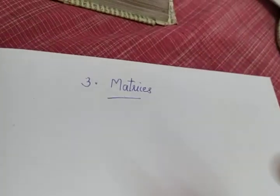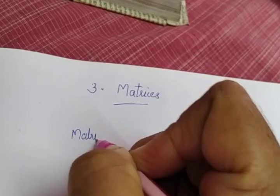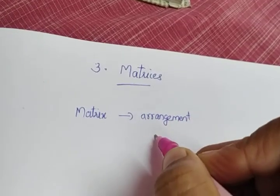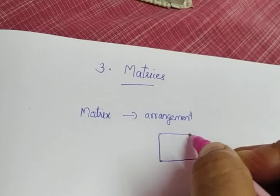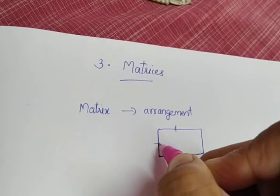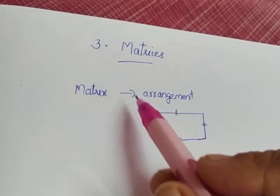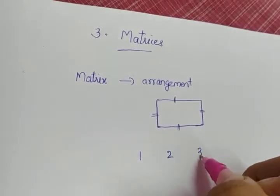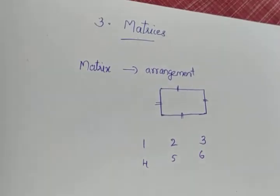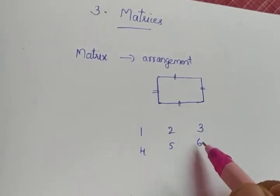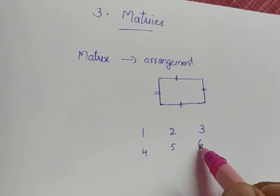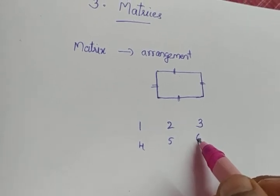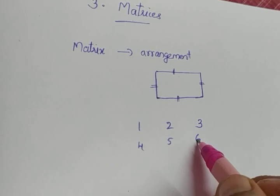The next chapter is matrices. What do you mean by the word matrix? A matrix is a rectangular arrangement. A rectangle has four sides where opposite sides are equal. Similarly, a matrix is a rectangular arrangement of numbers or functions in rows and columns.